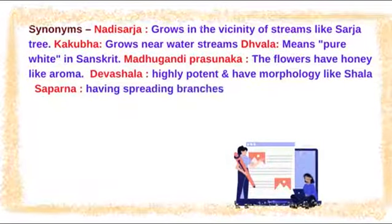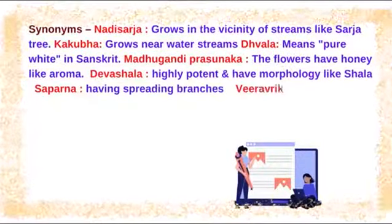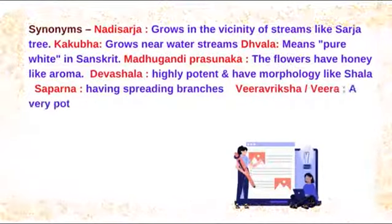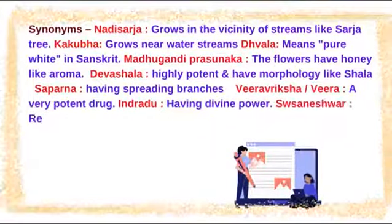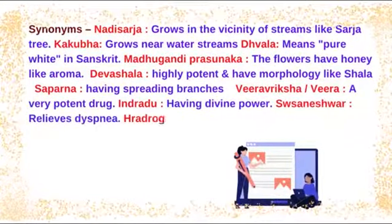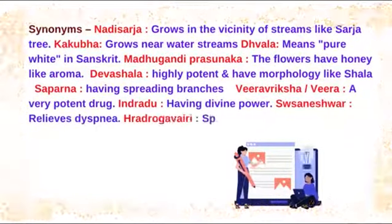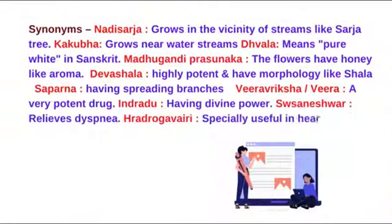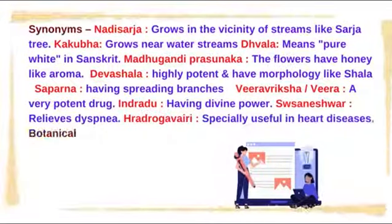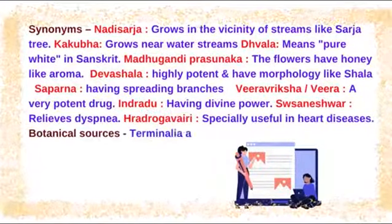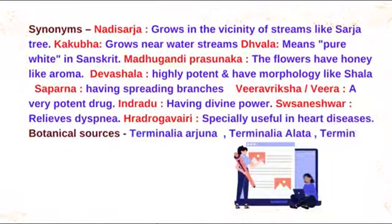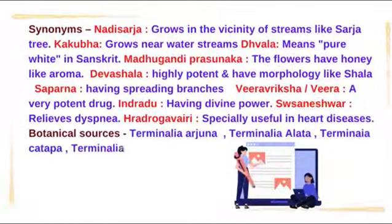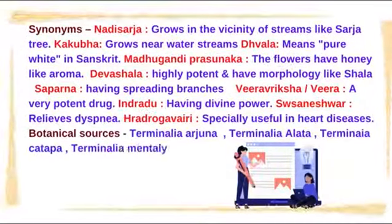Sarparnam – having spreading branches. Veeravriksha or Veera – a very potent drug. Indradohu – having divine power. Vasaneshwara – relieves dyspnea. Rudrogavairi – specially useful in heart diseases. Botanical sources: Terminalia Arjuna, Terminalia Alata, Terminalia Katapa, Terminalia Mentali.